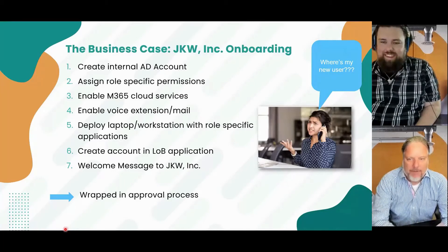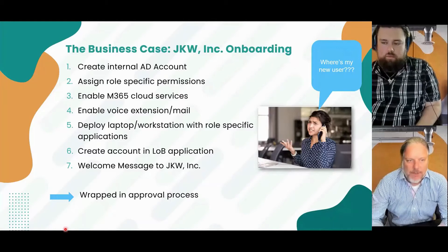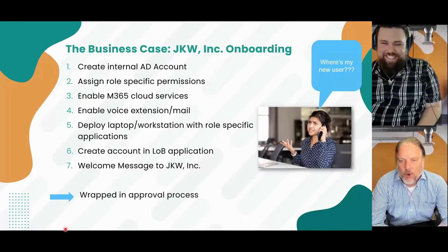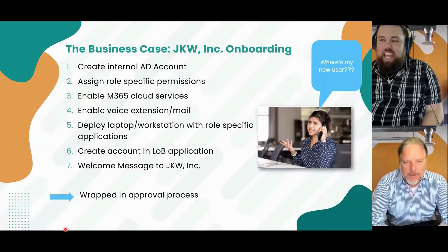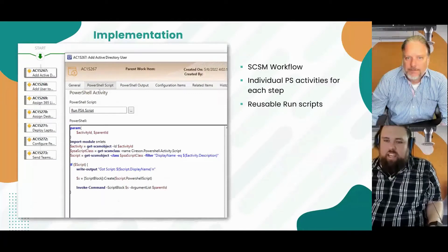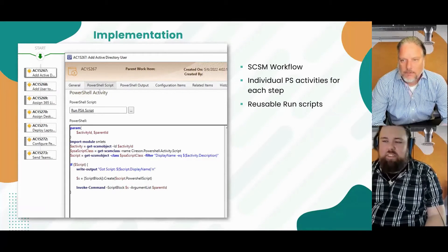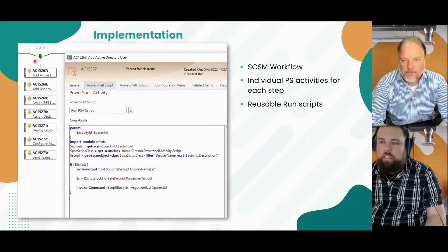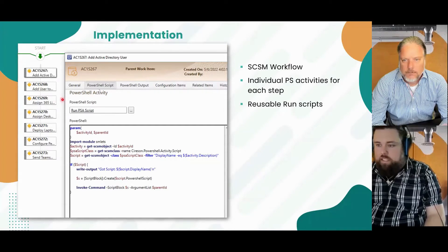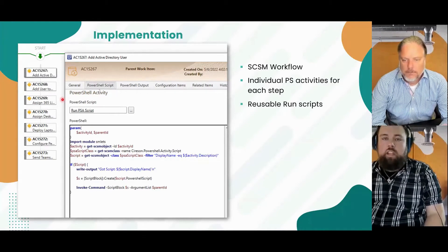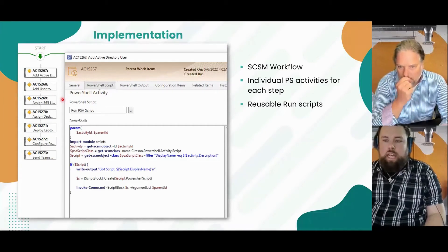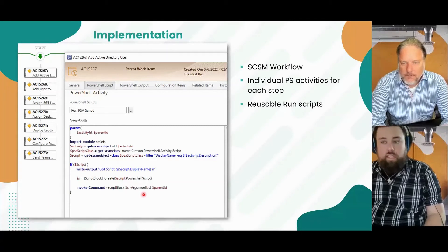We have all these different systems — internal as well as cloud systems. This is a screenshot from Service Manager, which is our ITSM tool of choice at JKW Inc. I've built this workflow inside of a service request using PowerShell activities. A PowerShell activity is a Cyrson tool that allows you to add PowerShell scripts in the context of an activity that runs within the broader context of a service request or change request. Once the activity becomes in progress, the PowerShell executes, and assuming it executes without error, the activity goes to completed and the next phase of the chain in the service request goes on.